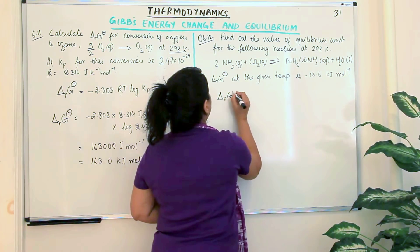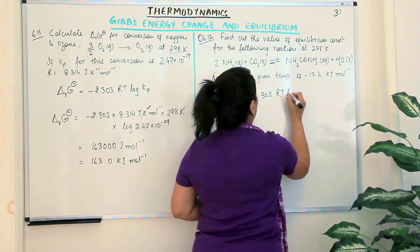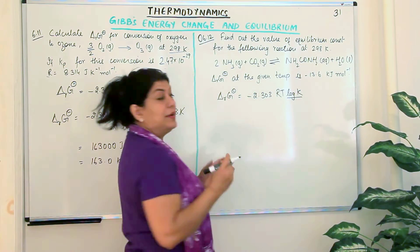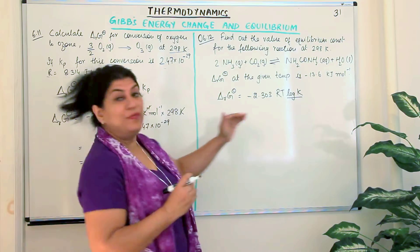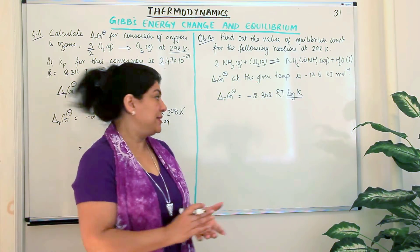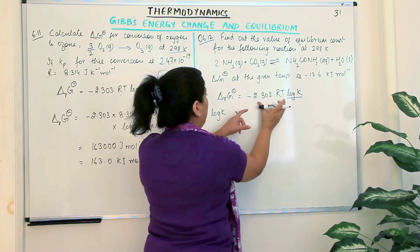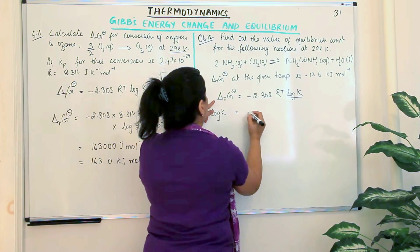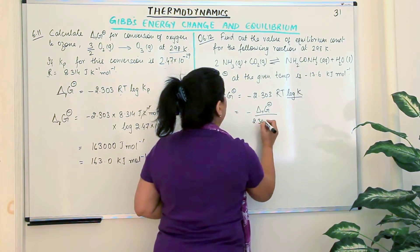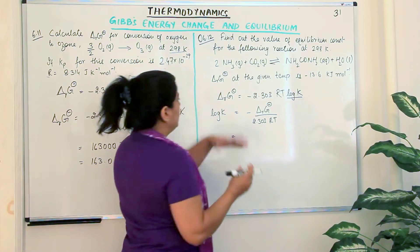We know that delta RG° = −2.303 RT log K. We are expected to find out K. So we first find log K from this equation, then take the antilog to get K. Rearranging: log K = −delta RG° / (2.303 RT). We take everything, including the negative sign, to the other side. Let's now substitute the values.